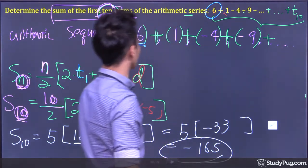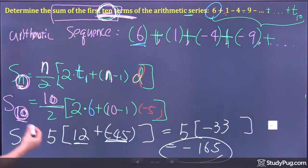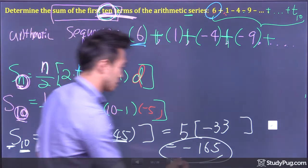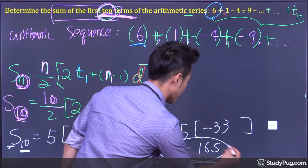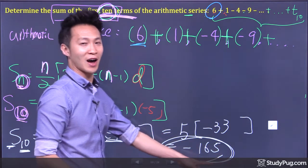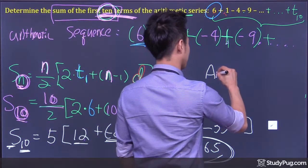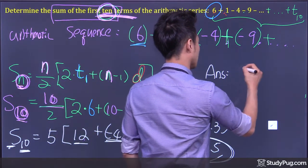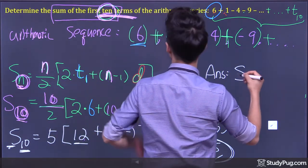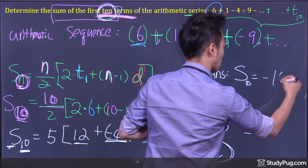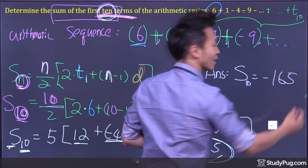There we go. The sum for the first 10 terms is negative 165. That's the answer.